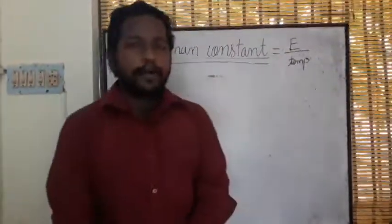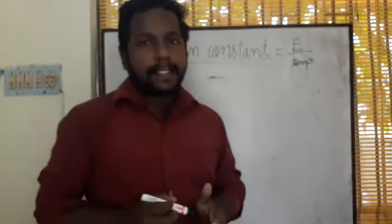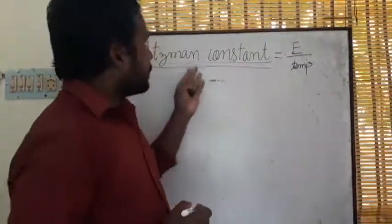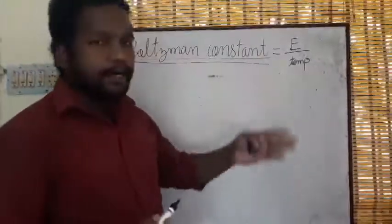Hello students, in this video I am going to show you how to find the dimensional formula and SI unit for Boltzmann constant. Boltzmann constant represents how much energy is emitted per degree Celsius, or energy per unit temperature.